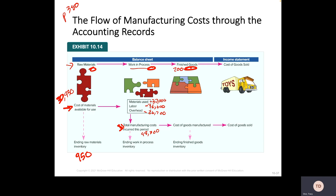Here we have our total manufacturing costs, and the ending work in process inventory is $3,700. That means the only thing left in work in process at the end of the period is $3,700 — the rest moved into finished goods. We had $2,000 at the beginning and added $94,600, giving us a total finished goods cost available for sale of $96,600.